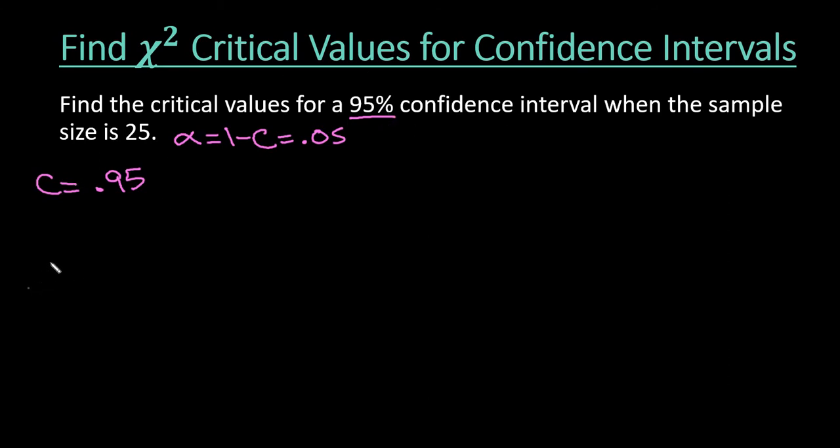If you remember with chi-square, this one is not a symmetric distribution. So when you are solving this, you're going to have two different values. When you're dealing with a normal distribution or a t distribution, your critical values are just the same things with different signs.